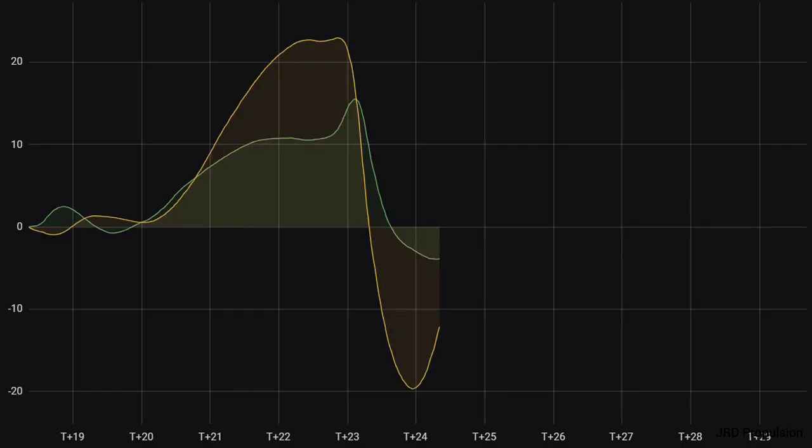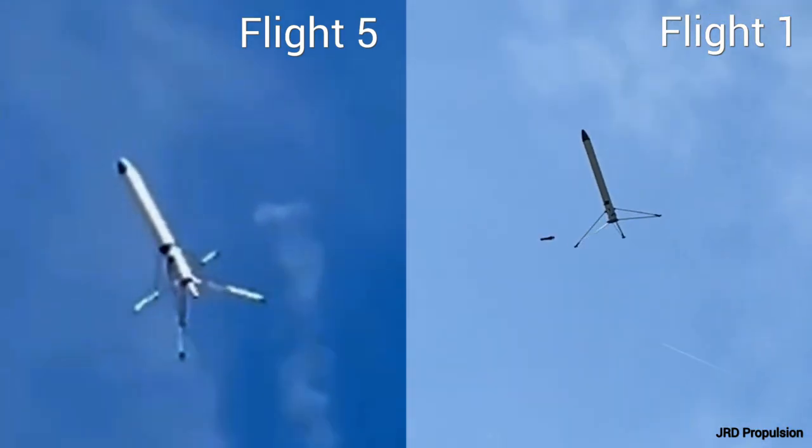For flight five, the rocket had a clean ascent, only deviating by a maximum of five degrees. However, after the ascent motor burnt out, it failed to eject, which it did successfully on the first flight.